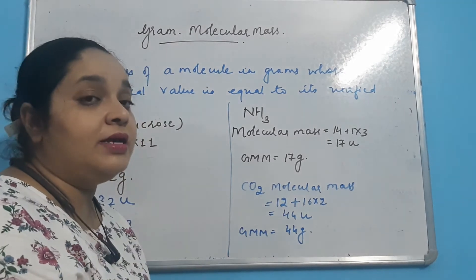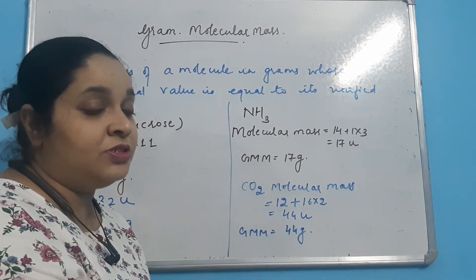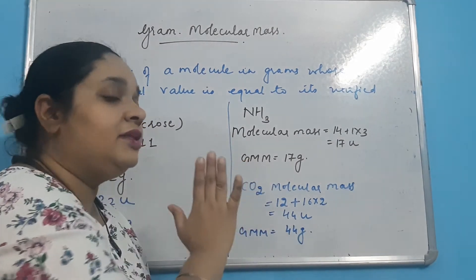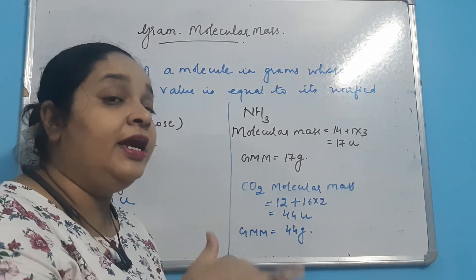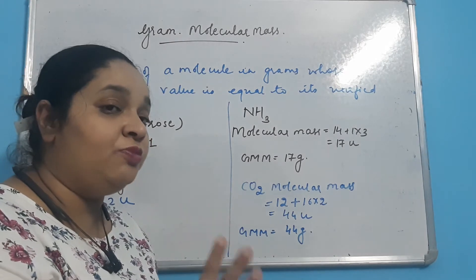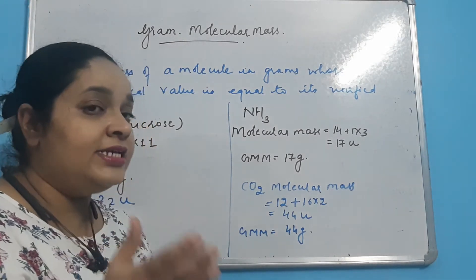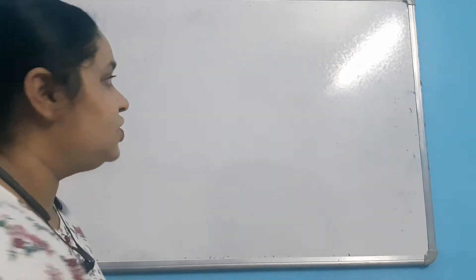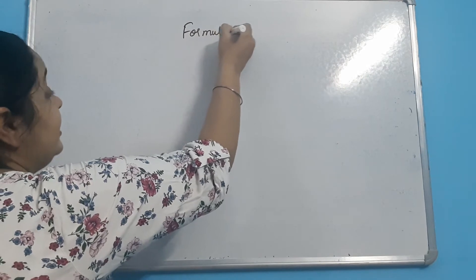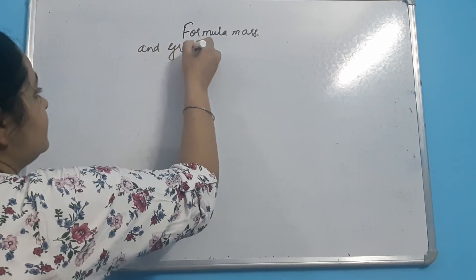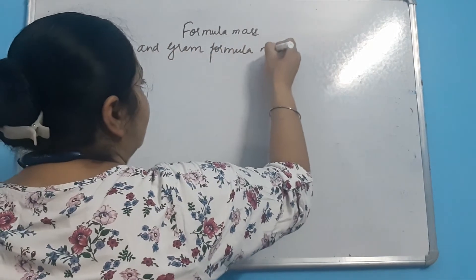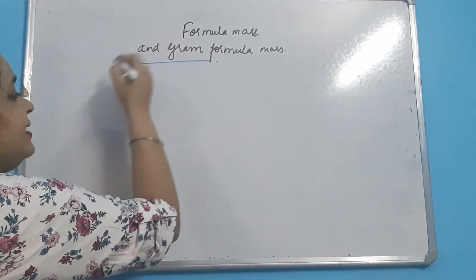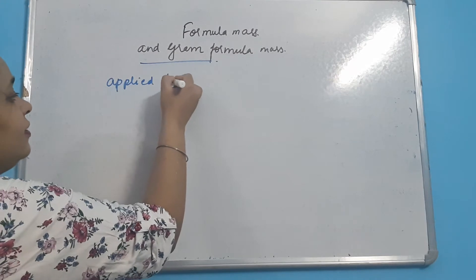Ab atomic mass aur molecular mass ke alawa, ek term aur aap bahut jagah padhenge — that is known as formula mass. Formula mass ki jo calculation hai, woh molecular mass ki tarah hi hoti hai, lekin formula mass hum specifically ionic compounds ke case mein use karte hain — for example NaCl, KBr, CaCl2, etc.